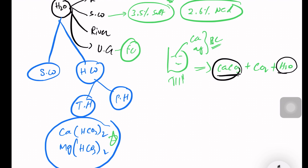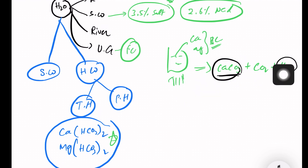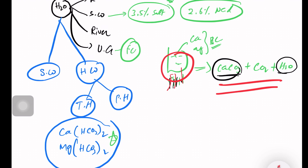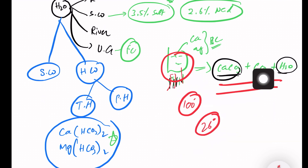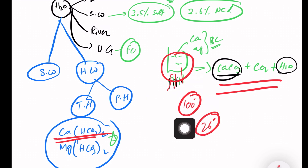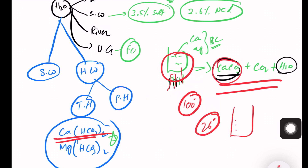Temporary hardness can be removed by boiling the water. When we boil the water, Ca(HCO3)2 decomposes — the bicarbonate splits and CaCO3 precipitates out. The boiling process reaches 100 degrees, causing the calcium bicarbonate to decompose and the water becomes soft.